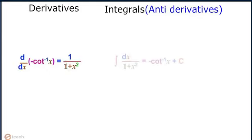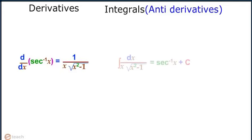d/dx of (minus cot⁻¹x) equals 1 divided by (1 plus x²). d/dx of sec⁻¹x equals 1 divided by [x times the square root of (x² minus 1)].